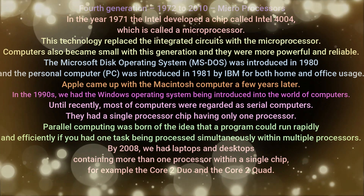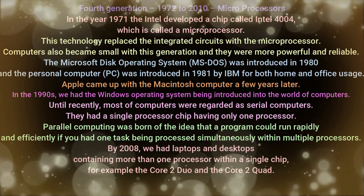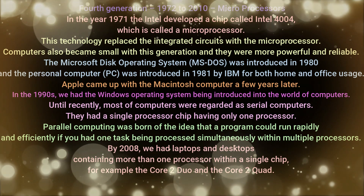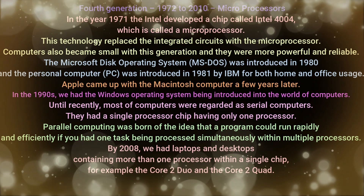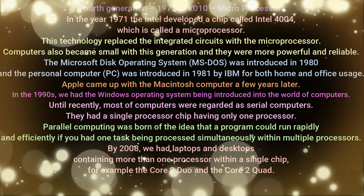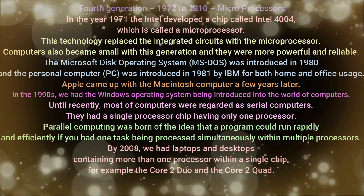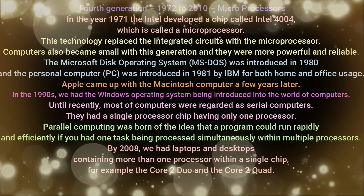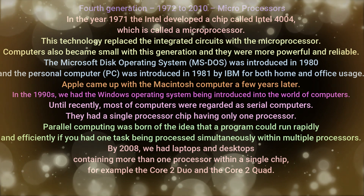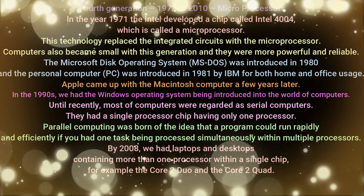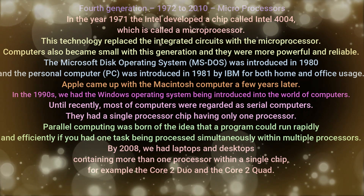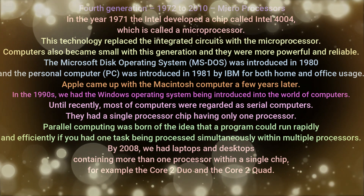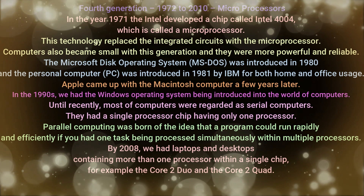The Microsoft Disk Operating System, MS-DOS, was introduced in 1980. The personal computer, PC, was introduced in 1981 by IBM for both home and office usage. Apple came up with the Macintosh computer a few years later. In the 90s, the Windows operating system was introduced into the world of computers.